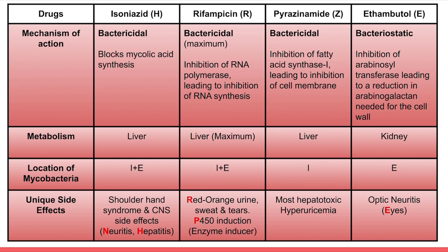Regarding metabolism: H, R, and Z are metabolized in the liver, with maximum metabolism for rifampicin in the liver, while ethambutol is metabolized in the kidney. For the location of mycobacteria, the first two drugs — isoniazid and rifampicin — act both intracellularly and extracellularly. The later two act at only one location: ethambutol is extracellular (remember 'E' for extracellular) and pyrazinamide is intracellular (remember 'I' for intracellular).